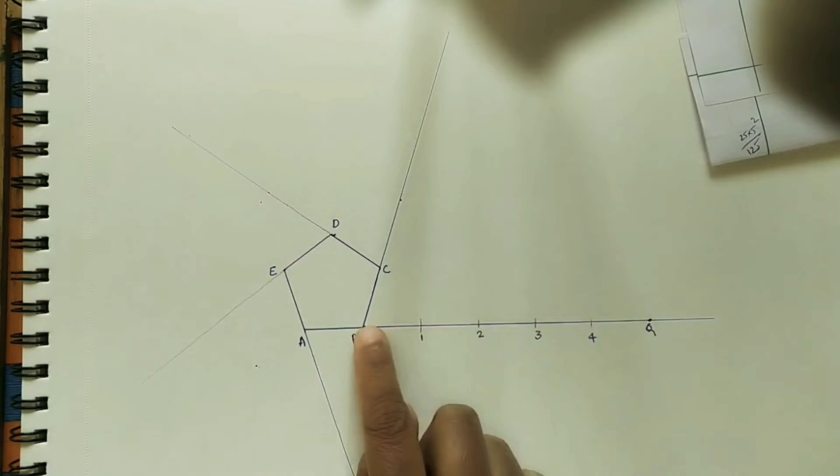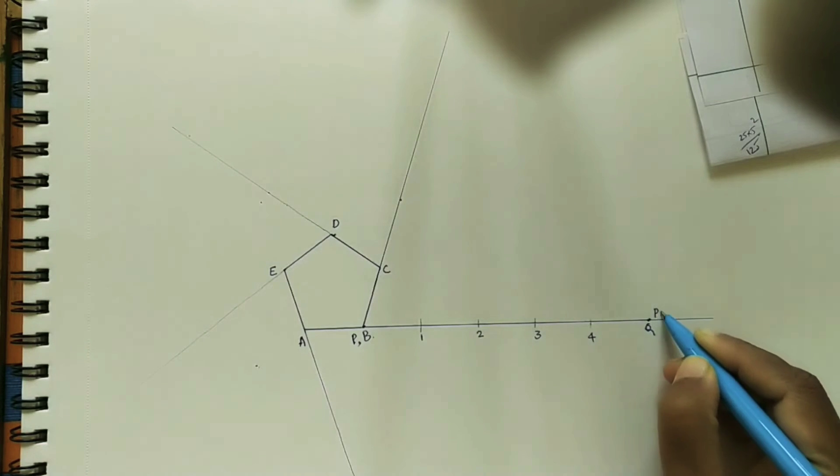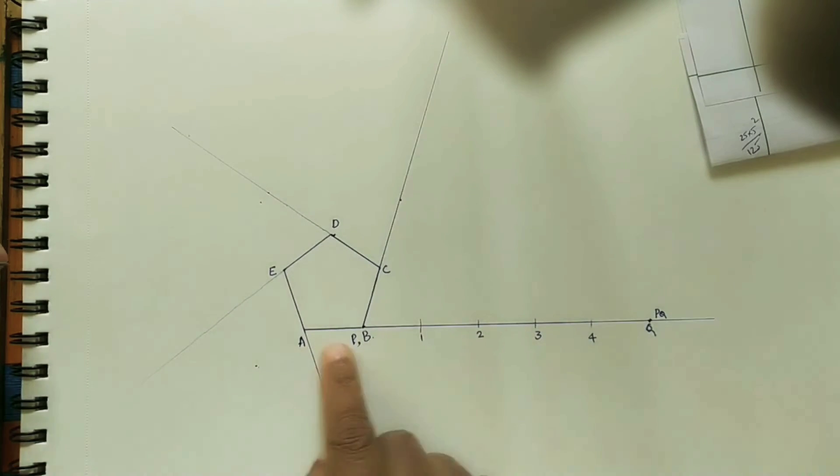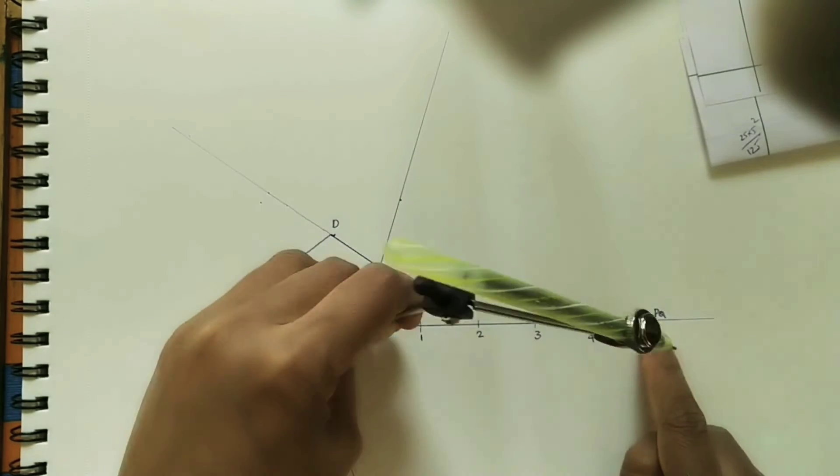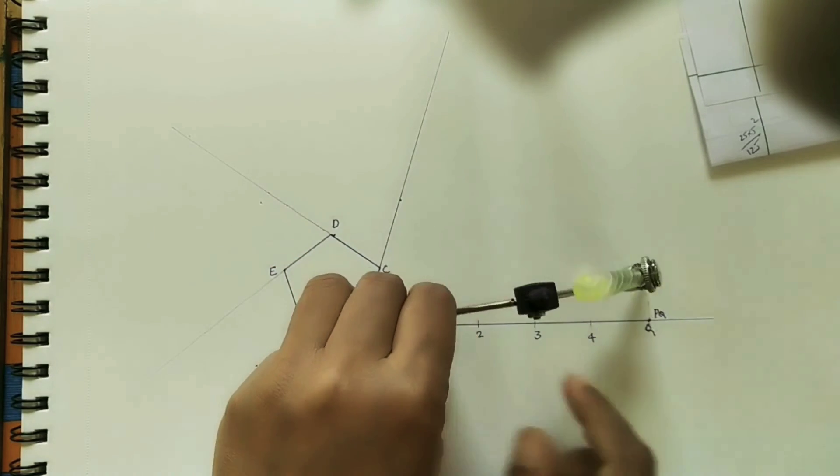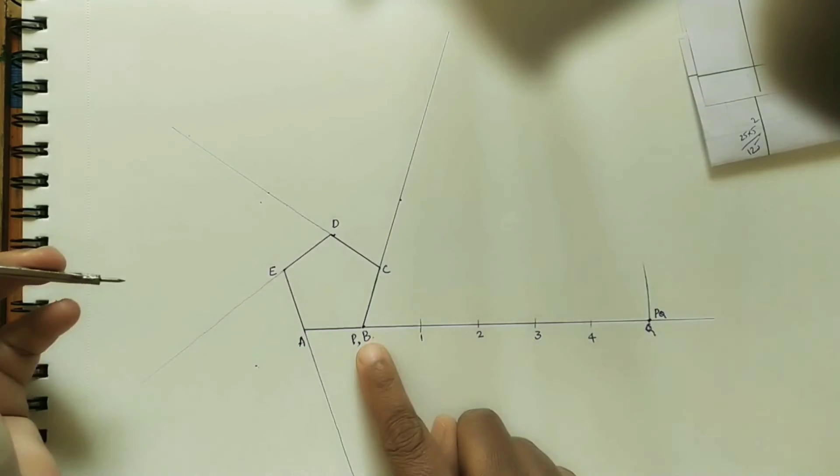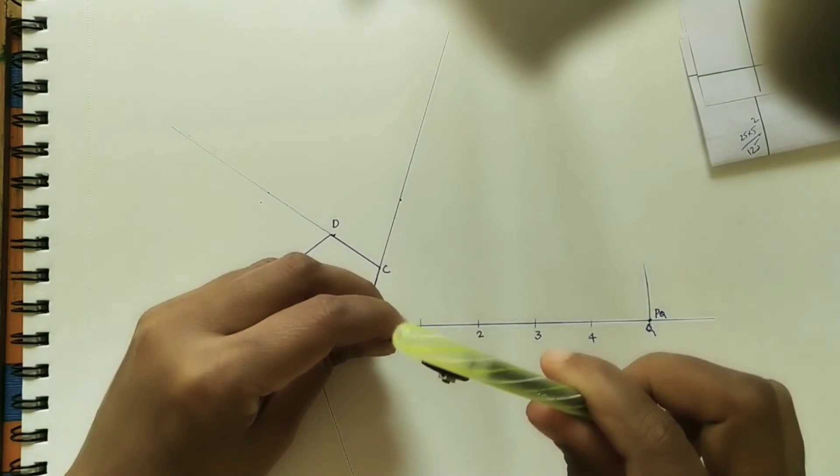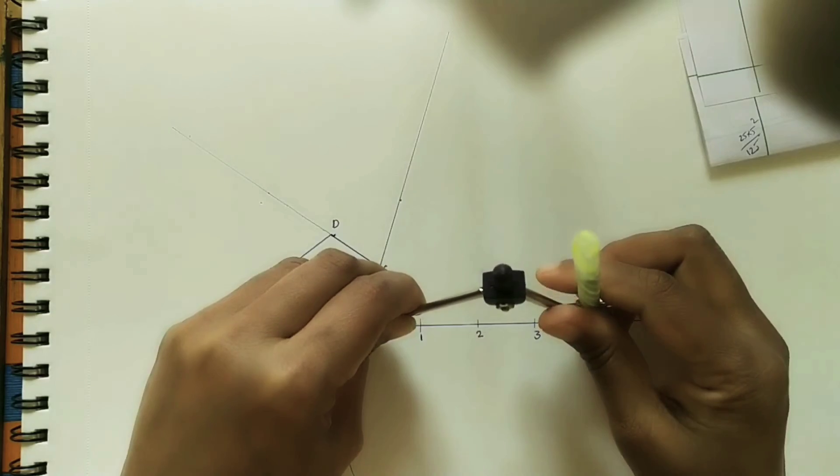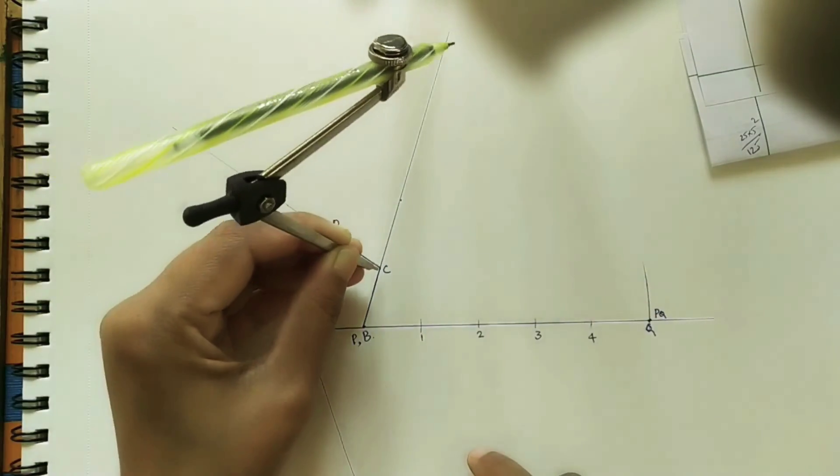Take first PQ length on the first line. Mark this PQ length at the Q point, PQ. So by using a compass, mark the same length. Just take one bigger arc at the Q point, that is the PQ length. Next take P4 length. Mark this P4 length on the second line at C.